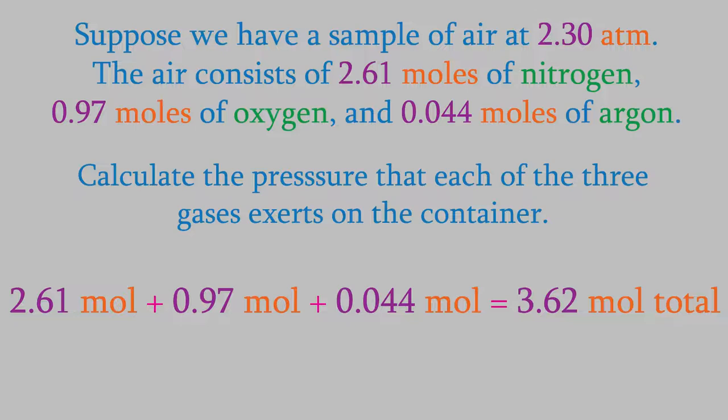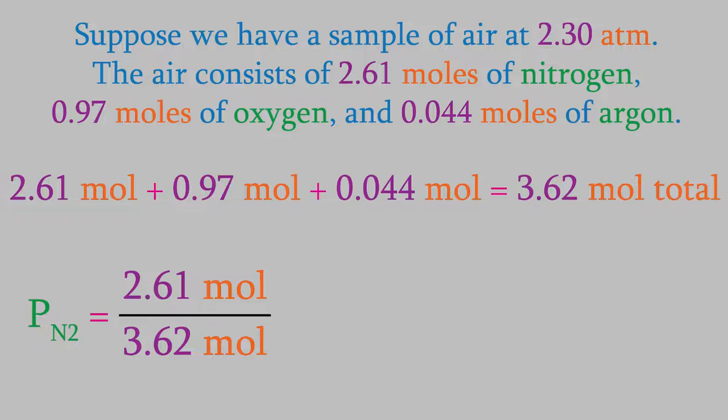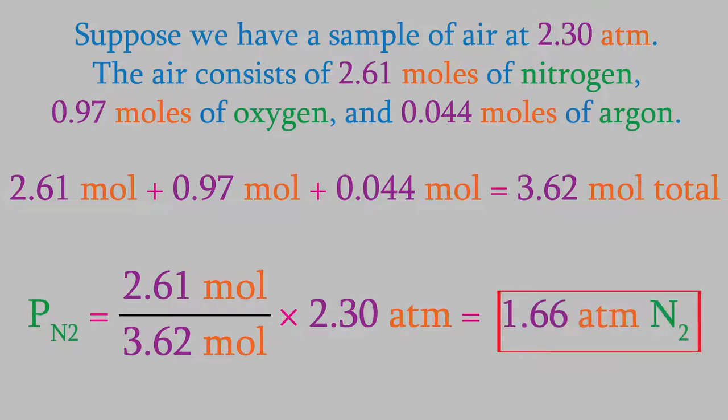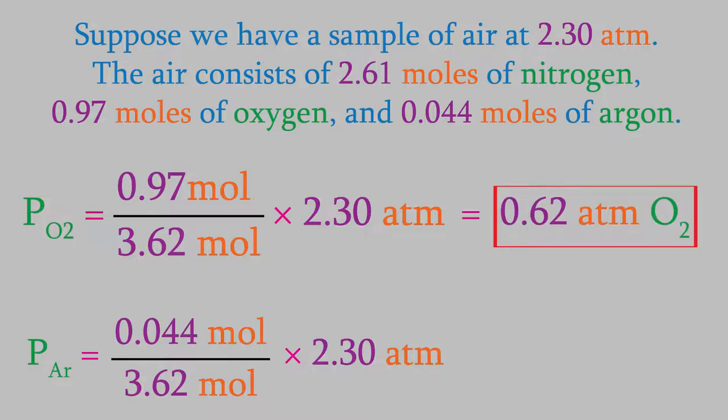For example, the pressure of the nitrogen is just the fraction of the overall pressure due to nitrogen. The fraction of the gas that is nitrogen is 2.61 moles divided by the total moles, and we multiply that by the overall pressure. That gives us 1.66 atm for the nitrogen pressure. If we do the same thing for the oxygen and the argon, we get 0.62 atm for the partial pressure of oxygen, and 0.028 atm for the partial pressure of argon.